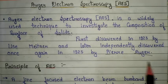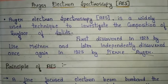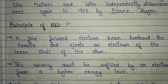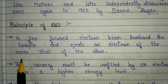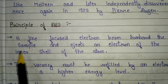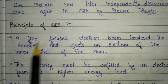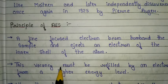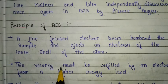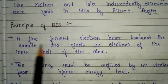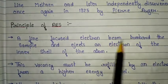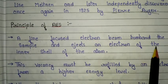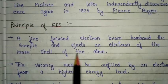Now the principle of Auger electron spectroscopy is very important. In this video we are going to discuss the principle point-wise and also try to explain it with a diagram. The first point: a fine-focus electron beam bombards the sample and ejects an electron from the inner shell of the atom.